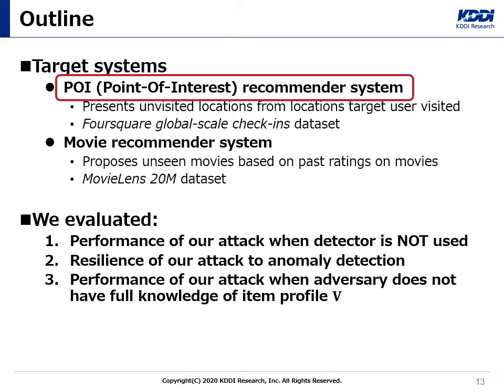We conducted three types of experiments. First, we evaluated the performance of our model inversion attack when no attack detector was used. Second, we evaluated the resilience of our attack to anomaly detection. If the behavior of malicious users is totally different from normal users, it would be easy to detect them. However, our model inversion attack can avoid such detection by increasing the value of hyperparameter mu. Third, we evaluated the performance of our attack when the adversary did not have knowledge of the item profile. Since the results for both systems indicate a similar tendency, I will show only the results on the POI recommendation system.